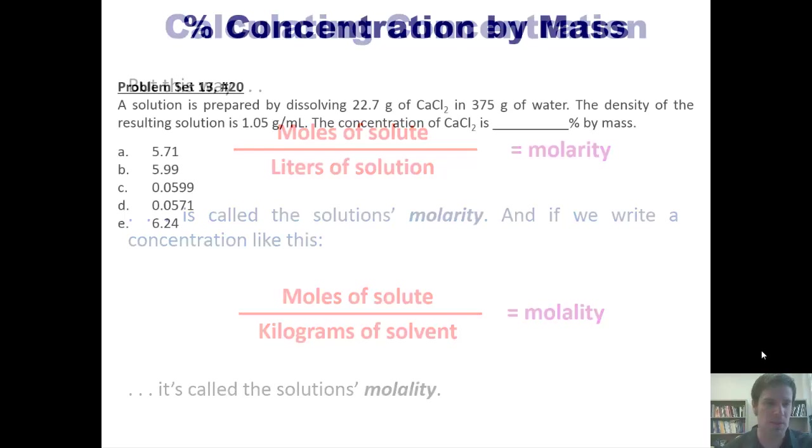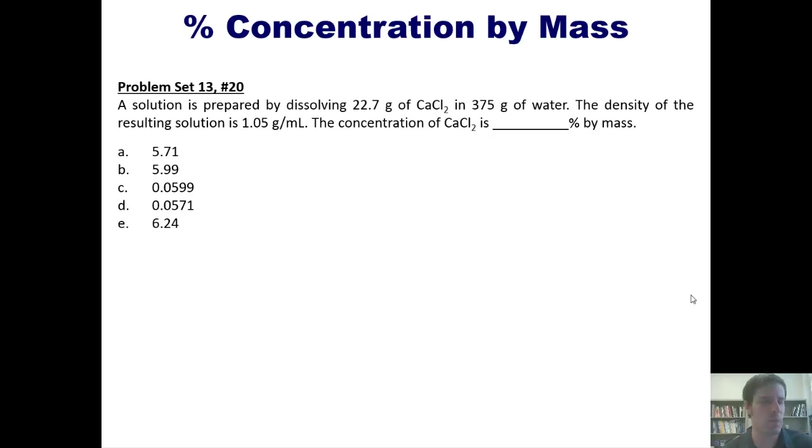So let's take a look at some problems. A solution is prepared by dissolving 22.7 grams of calcium chloride in 375 grams of water. The density of the resulting solution is 1.05 grams per milliliter. The concentration of calcium chloride is blank percent by mass. I'm not going to do this for you, but I will let you try it on your own. But I will post a link here to a separate video, which I do, which you're welcome to watch if you'd like.